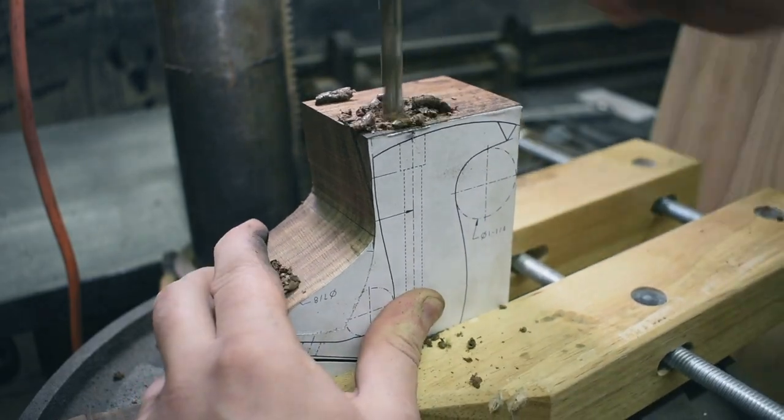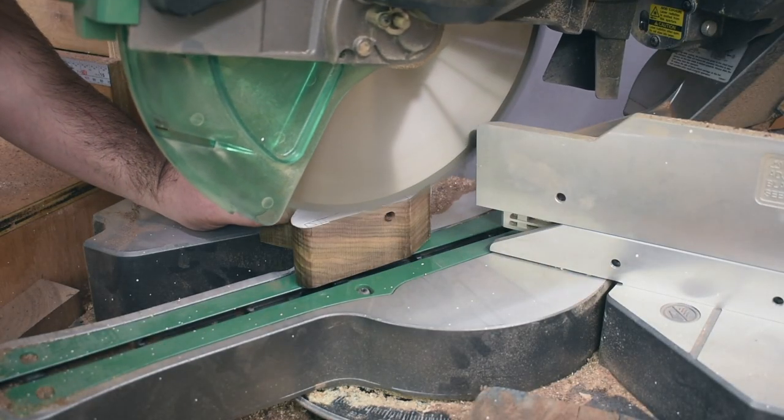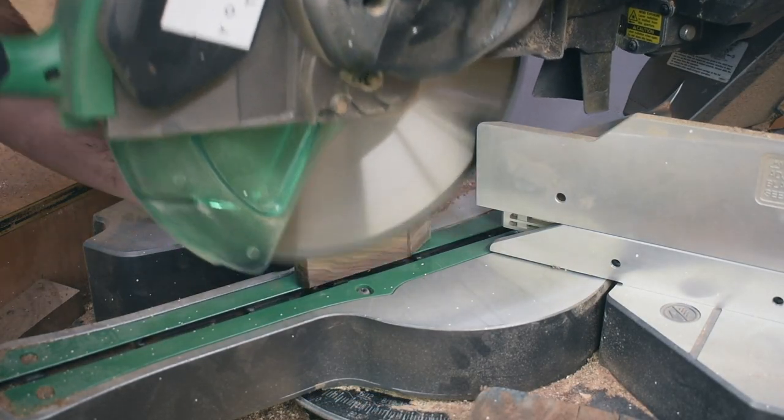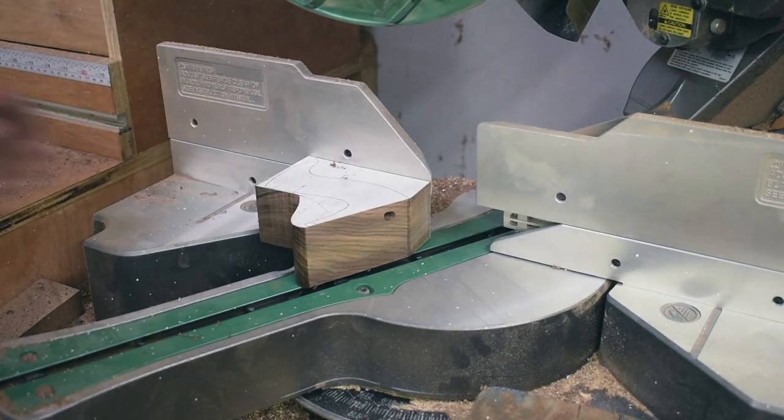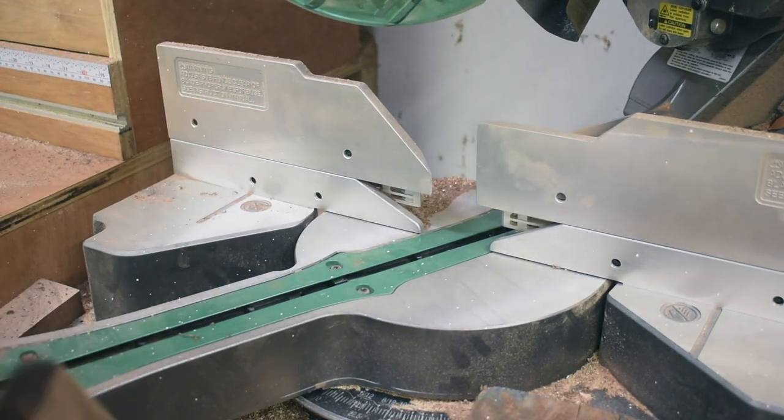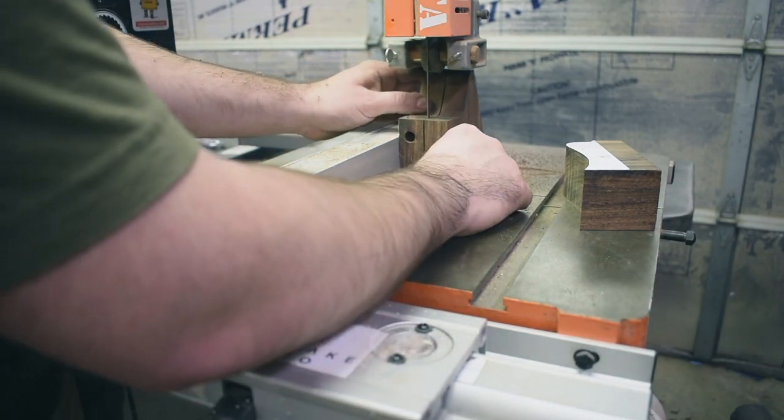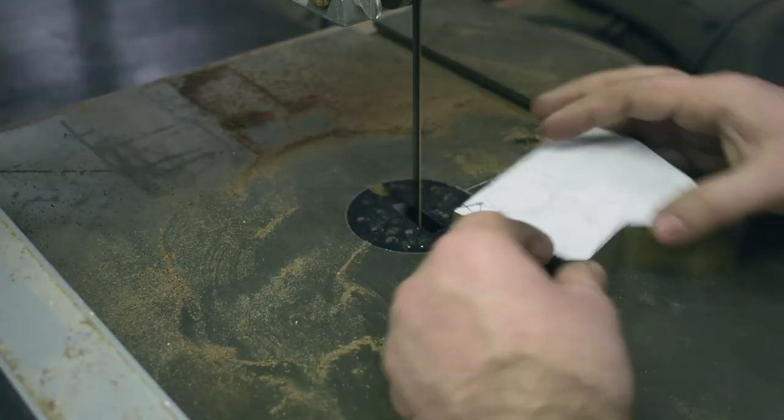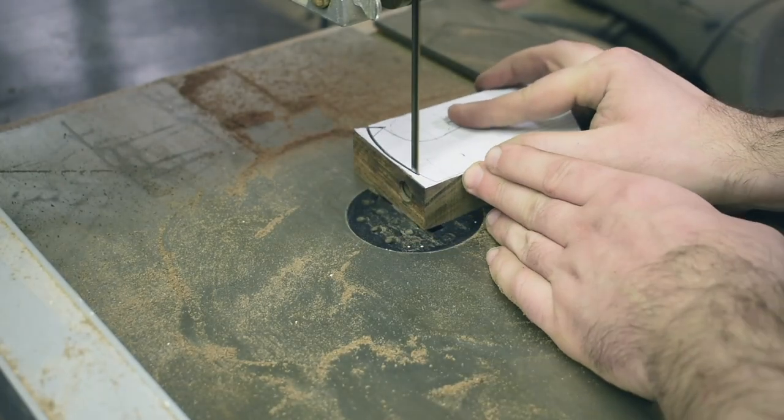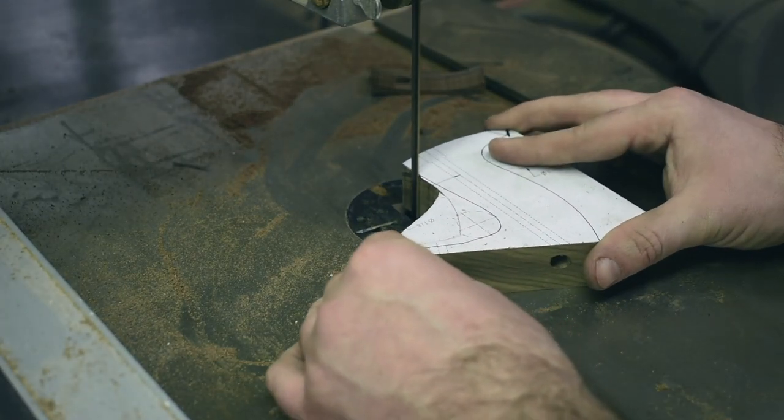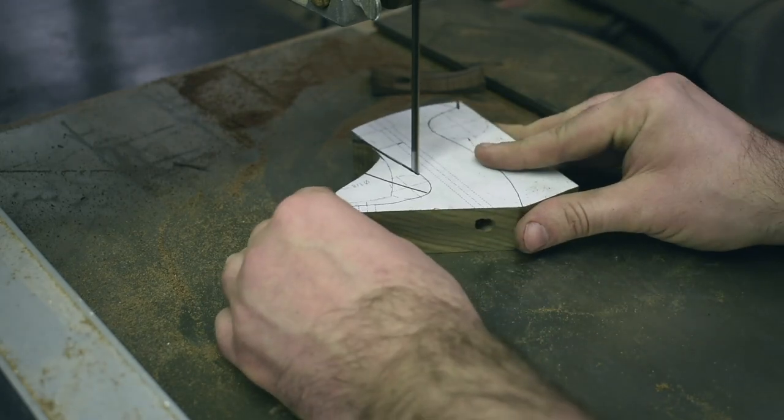I also took it to the miter saw to cut the place where the handle is going to meet the plane because that needs to be perfectly flat so they meet together the best. And then go back to the bandsaw and finish cutting out the rest of the template. You'll notice that I try to stay right on the edge of the line and then later I'll bring everything down to the right size because you can always take more away but it's really hard to add wood back.